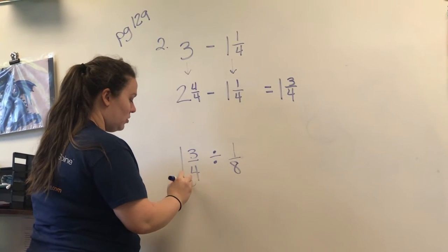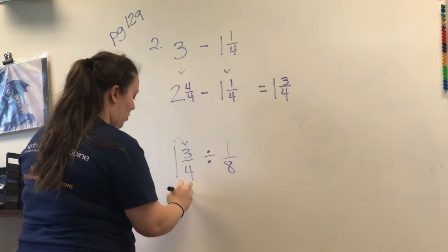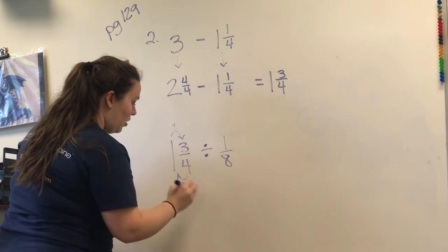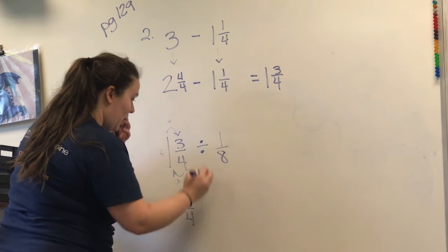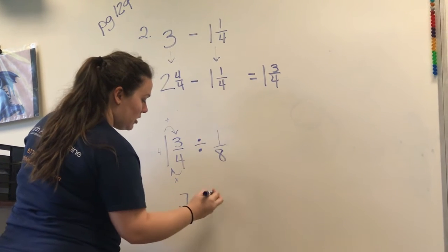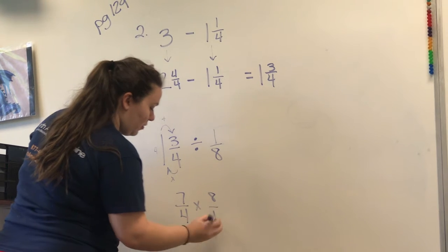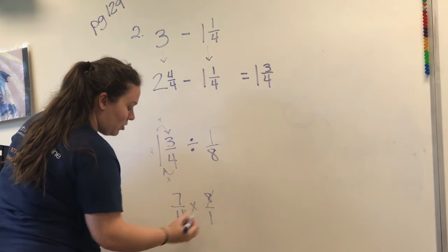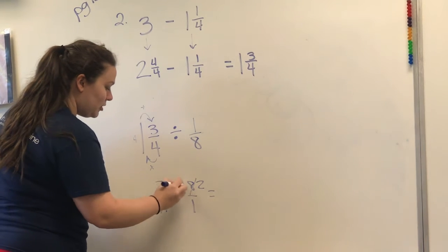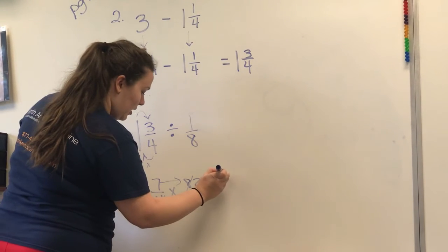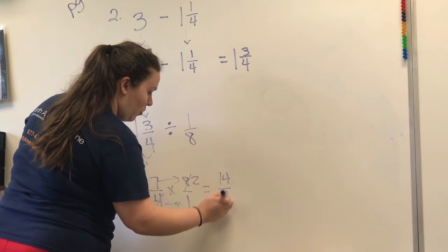We have to change this mixed number into an improper fraction. Seven over four times, switch this, do the reciprocal. Eight over one. I'm going to simplify. Both of those can be reduced by four. Multiply straight across and I get 14 over one.